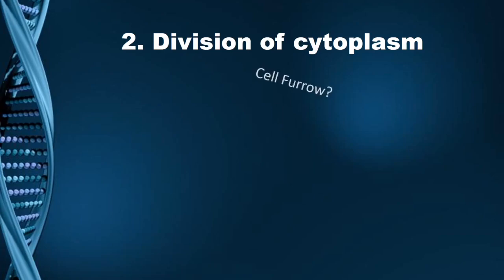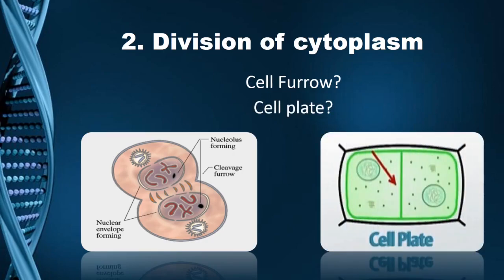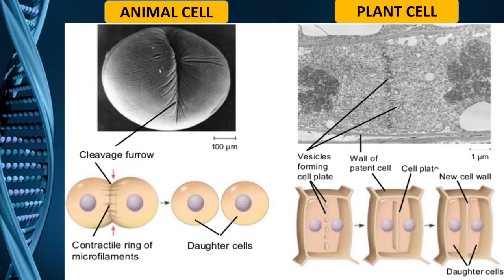The next difference is the division of cytoplasm — that is, how does the cytoplasm actually divide? Is it by cell furrow or by some other means? In an animal cell there is deepening of cytoplasm, which is denoted by furrowing. Whereas in a plant cell, division of cytoplasm occurs not by furrowing but instead by cell plate formation — a plate appears between two dividing plant cells which eventually separates them into two daughter cells.